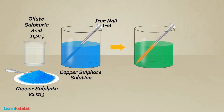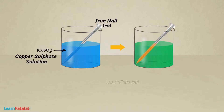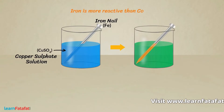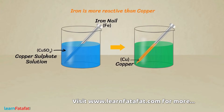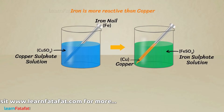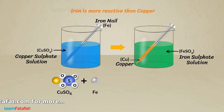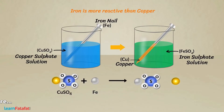Gradually, the blue colour of the solution changes to green. It is because iron is more reactive than copper. It removes the copper from copper sulphate and sits at its place. We can say iron displaces copper from copper sulphate.